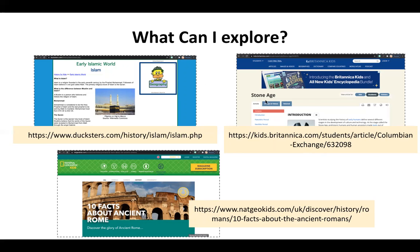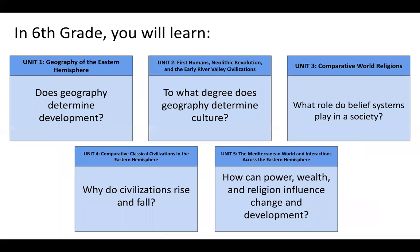I also recommend researching the Stone Age. The Stone Age is so fascinating, and if you go to Britannica Kids, they have so many awesome pictures and information about the Stone Age — here is the link for that. And last but not least, National Geographic Kids has 10 facts about ancient Rome. This is going to be so fun and interesting. I highly recommend you check out this culture. Also, feel free to search any of the keywords from the units you will be studying to see if you can learn more about those topics over the summer.